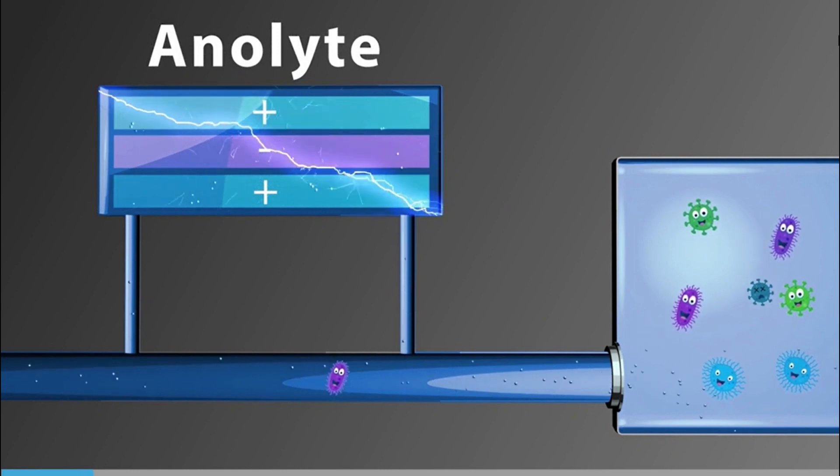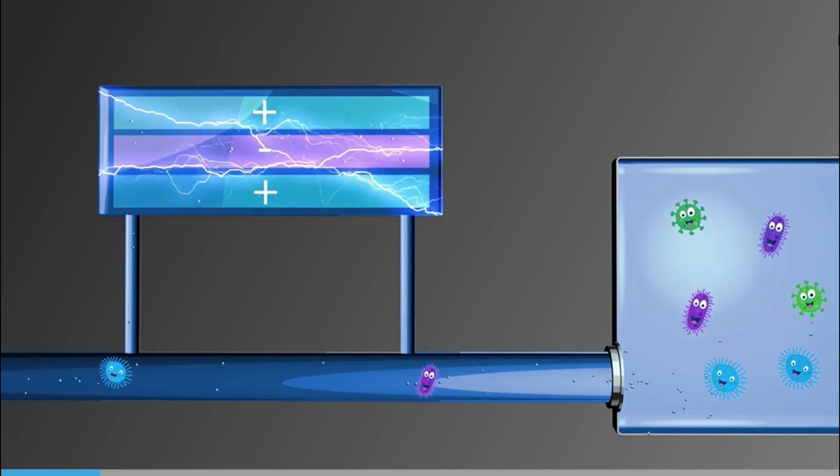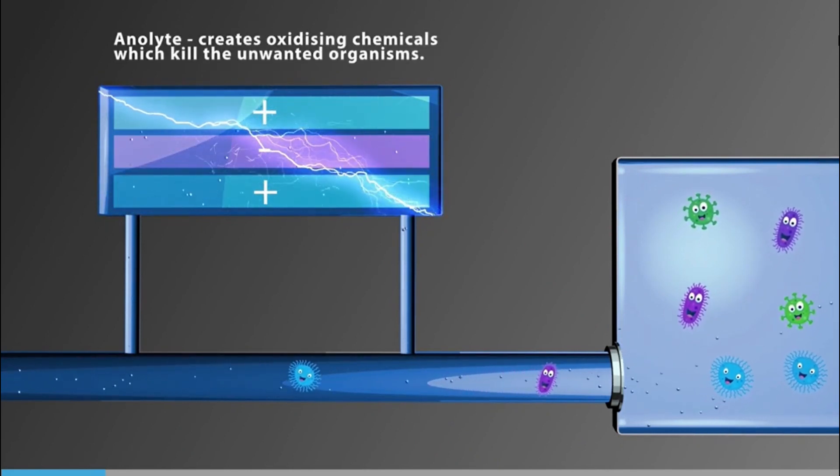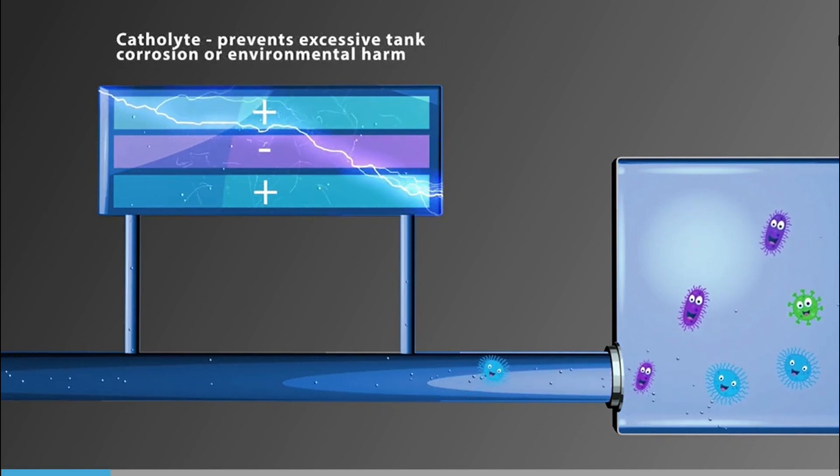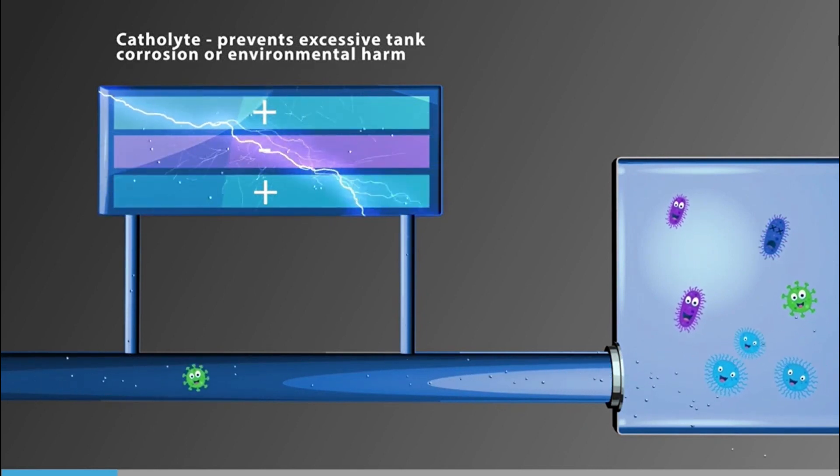The anolyte is injected into the ballast water where it creates oxidizing chemicals which kill the unwanted organisms. The catholyte can be used to neutralize the pH change later, preventing excessive tank corrosion or environmental harm.